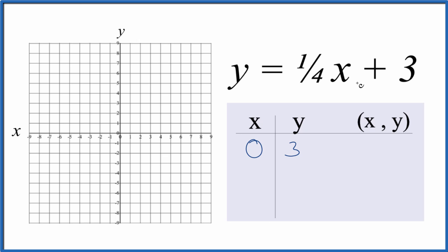It's nice if we get a whole number here. So we could say four, one-fourth times four, that's just one. One plus three is four. And how about negative four? One-fourth times negative four is negative one, plus three is just two.